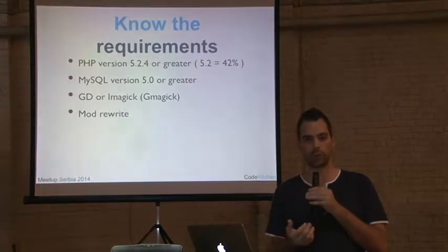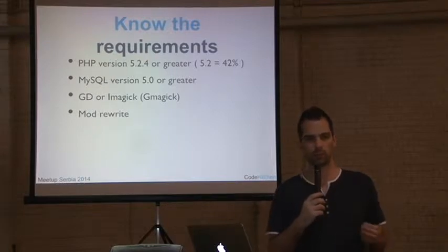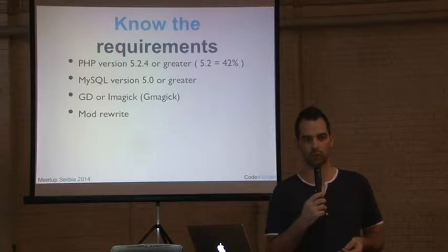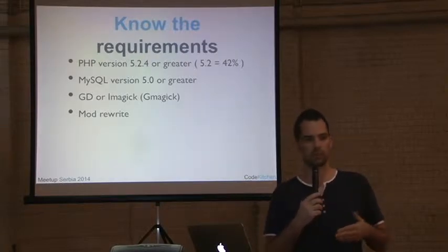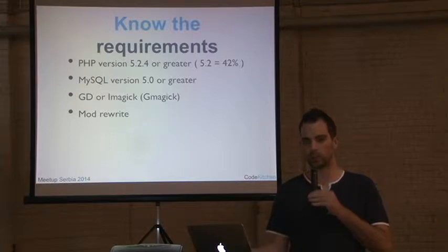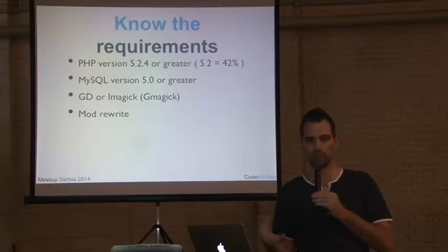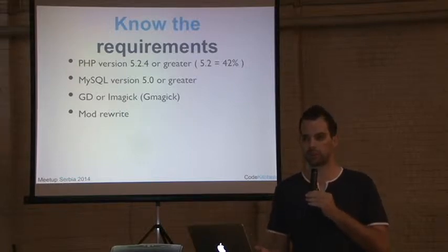Know the requirements of WordPress. About 30-40% of plugins on WordPress.org fail because of missing server requirements. Many plugins expect PHP 5.3 or higher because developers implement things they shouldn't. Know what MySQL requirements you have, know if GD or ImageMagick is installed, know that mod_rewrite or something similar should be installed for WordPress to work.